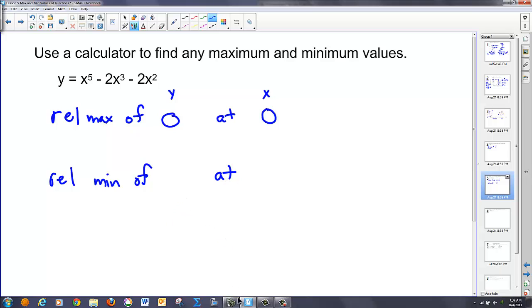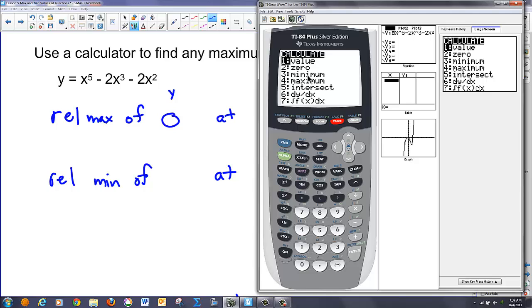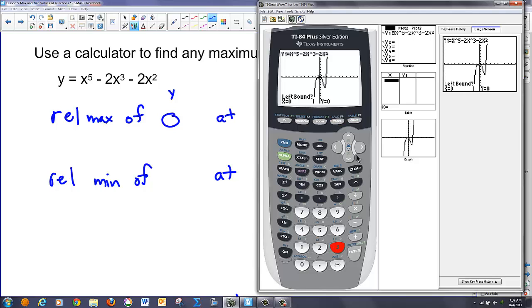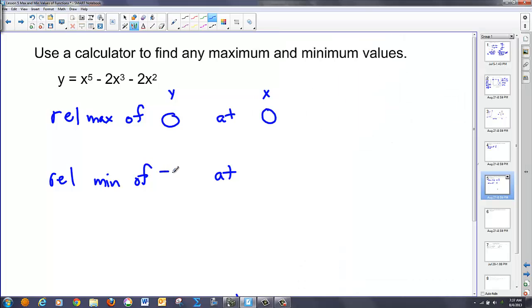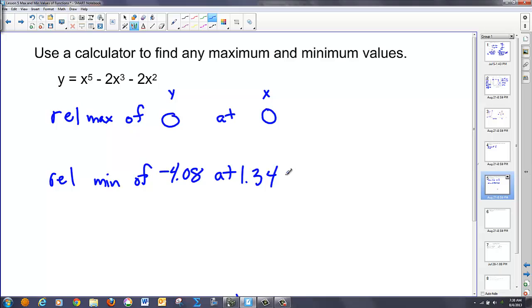And then in our second case, we're going to need to calculate that. So we'll go calculate once again. This time our minimum value. That's 3. And I'm going to need to go to the left of that low point, which is roughly here. The right of that low point. Let's keep the cursor on the screen so you can see it. Right here. Hit enter for a third time. And you'll notice our y value is roughly negative 4.08. So I'm going to put that after the of. And then our x value is roughly 1.34. And there we have it.